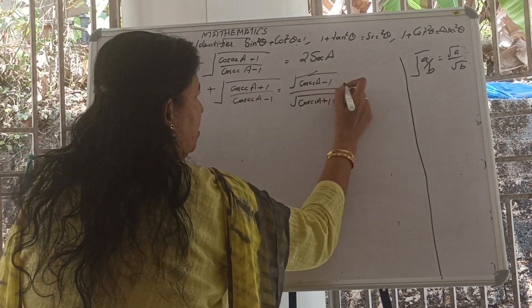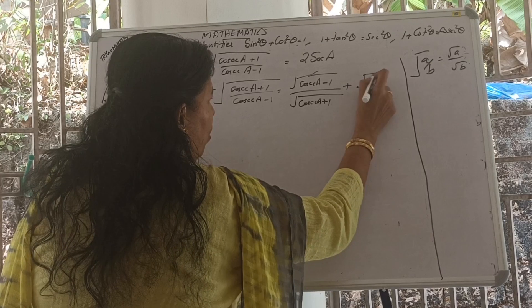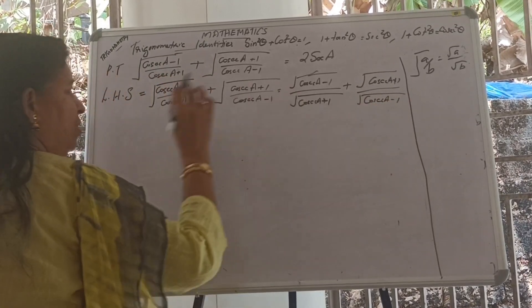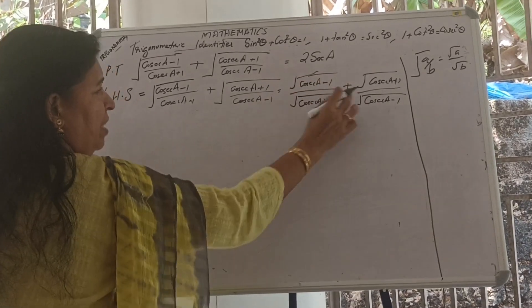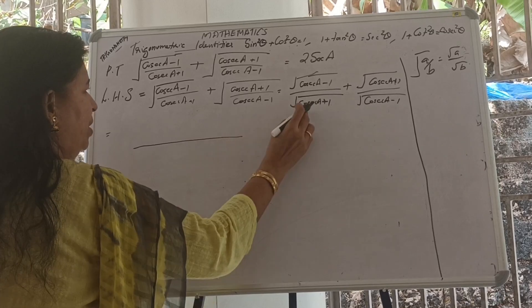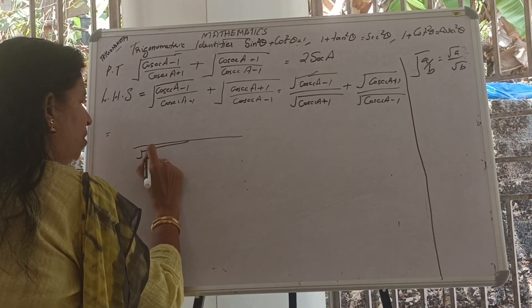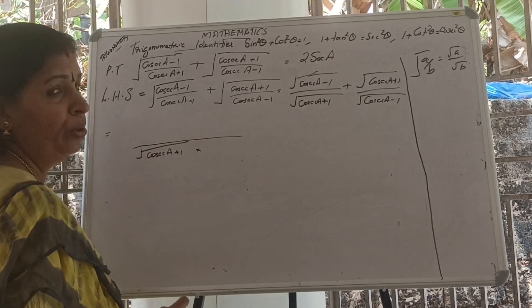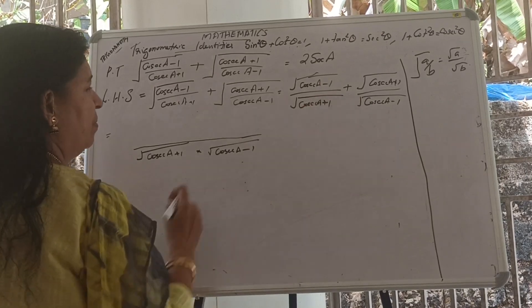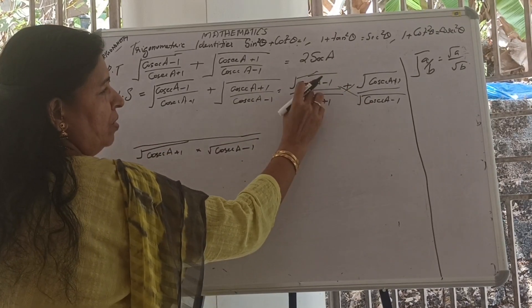The first term becomes square root of (cosec A minus 1) by (cosec A plus 1) multiplied by (cosec A minus 1) over (cosec A minus 1), and the second term becomes square root of (cosec A plus 1) by (cosec A minus 1) multiplied by (cosec A plus 1) over (cosec A plus 1). Then cross multiply.